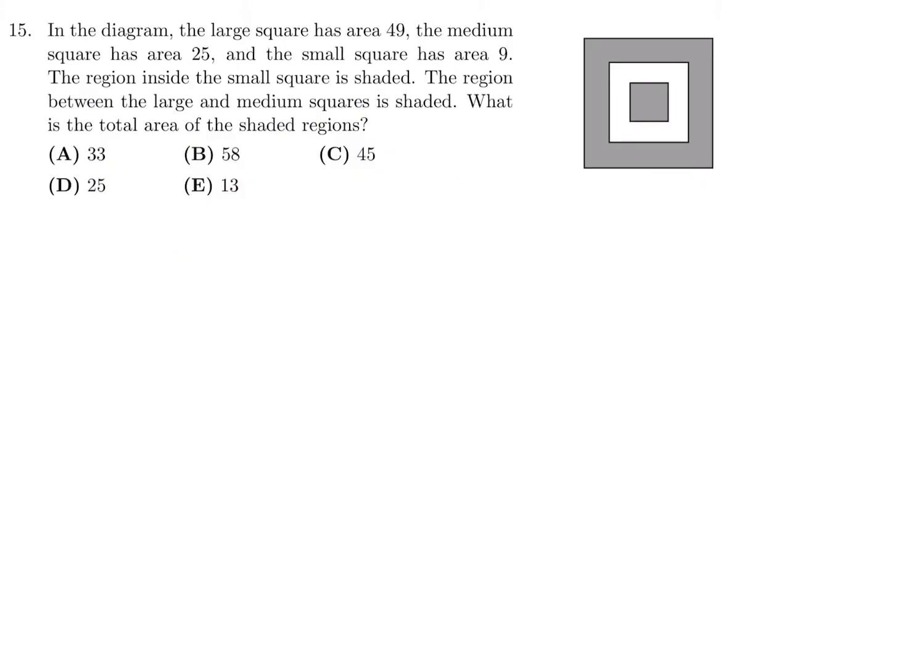In the diagram, the large square has an area of 49, the medium square 25, small square 9. The region inside the small square is shaded. The region between the large and medium squares is shaded. What is the total area of the shaded regions? We'll call this A and we'll call this B. If we want B plus A, B is just that three by three square, which they even just told me it's nine. Now, A would be the big square minus the medium square. So that's going to be 49 minus 25. Nine plus 49 minus 25 is 24. So this looks like 33. Number 15, the answer is A.